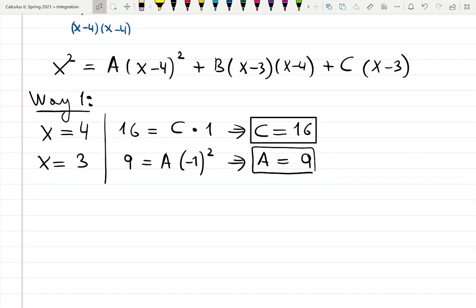What was the last thing you want to plug? So we did 4, we did 3. We can do 0. We need 3 inputs to solve for 3 unknowns. So we're going to have 0 equals 16A plus 12B minus 3C.